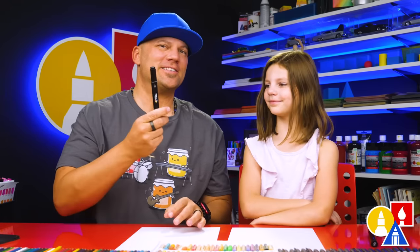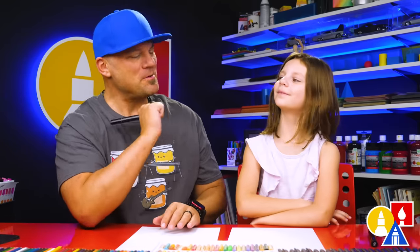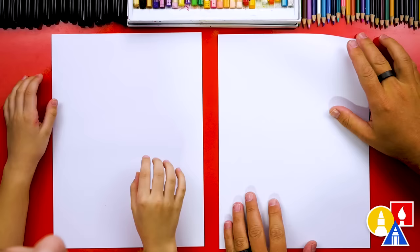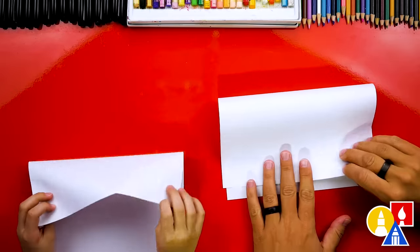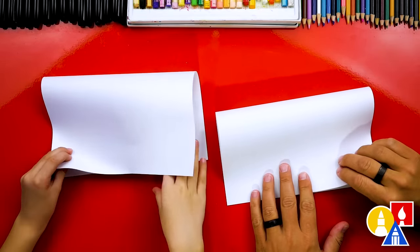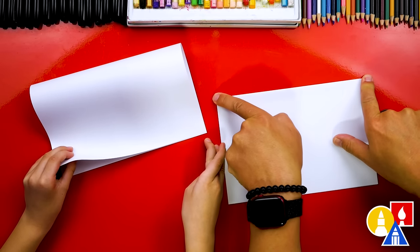You need your drawing supplies. We're using markers but you can use whatever you have. You also need some paper. You ready to start? First let's fold our paper. We're going to take the top edge, line it up with the bottom edge, and when it's lined up we'll crease it down and out to the corners.